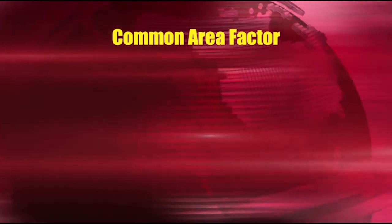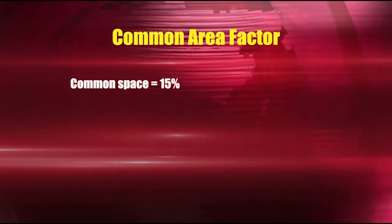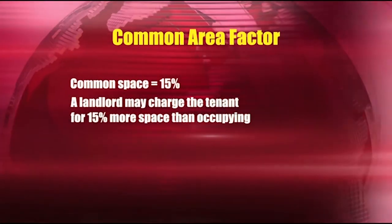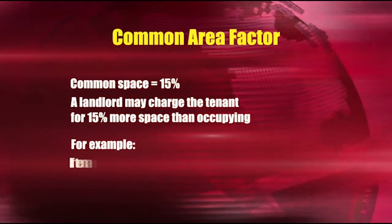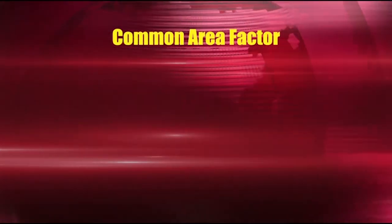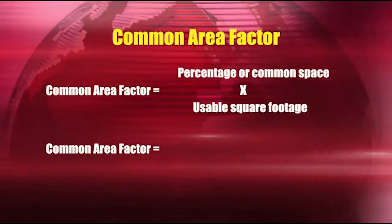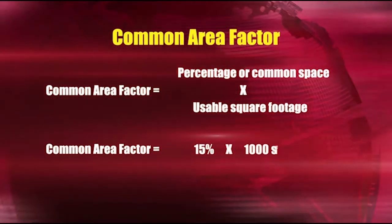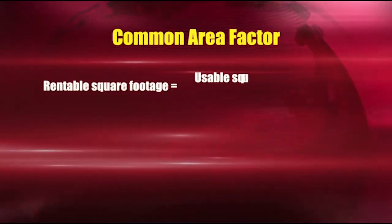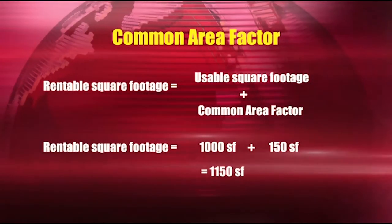Let's do a quick calculation to explain the common area factor. If the common space in a building is approximately 15% of the total building, a landlord may charge the tenant for 15% more square footage than they're occupying. For example, if a tenant is leasing 1,000 square feet, the tenant may be charged for 1,150 square feet. Common area factor equals the percentage of common space times the usable square footage: 15% × 1,000 square feet = 150 square feet. So the rentable square footage equals usable square footage plus the common area factor: 1,000 + 150 = 1,150 square feet.